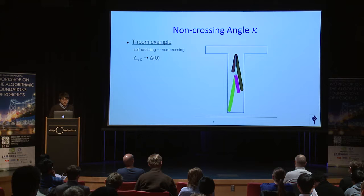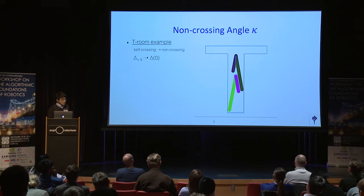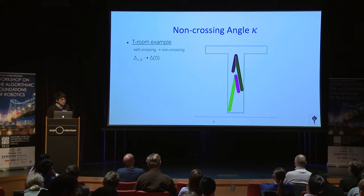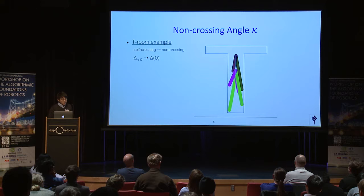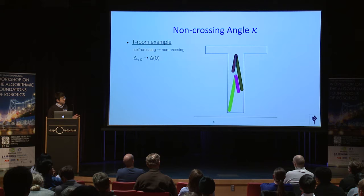Here is a T-room scenario to illustrate self-crossing and non-crossing cases. At the top is the start and at the bottom is the goal. If there is a non-crossing constraint, the robot will take advantage of the bar of the T to reach the goal.